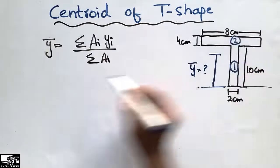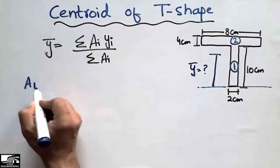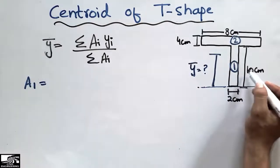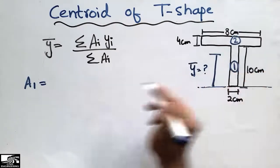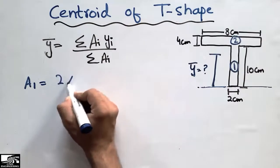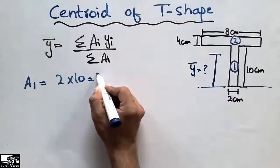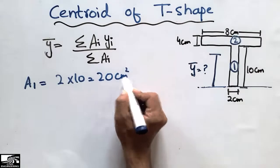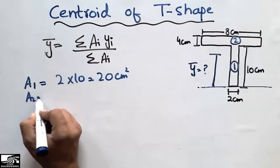The first one, the area of this object is multiplying the two dimensions, 2 into 10, 2 here and 10, we get 20 centimeter square.